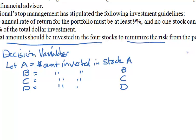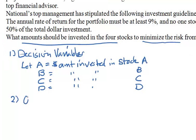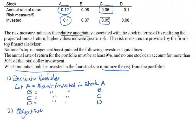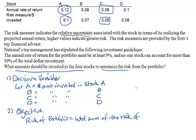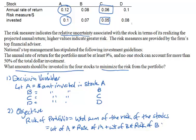The second step is to work out the objective function. We want to minimize the risk of the portfolio. A portfolio just means the total investment, and we could think of the risk as the amount of money that's at risk. The risk of the portfolio is the weighted sum of the risks of the assets — that is, the stocks. That is: weight of A times the risk of A, plus weight of B times the risk of B, and so forth.